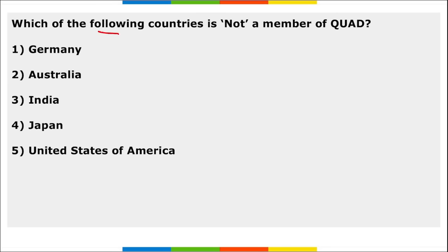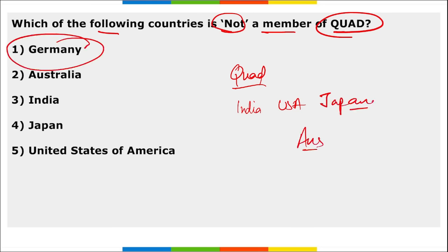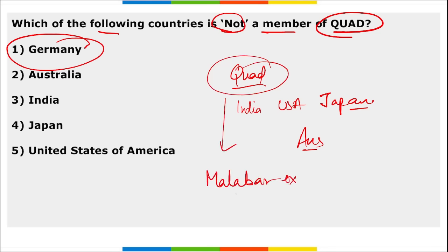Next, which of the following countries is not a member of Quad? The members of Quad countries are India, USA, Japan, and Australia. Among the given options, Germany is not a member of the Quad. There is also an exercise conducted by Quad countries — that is the Malabar Exercise.